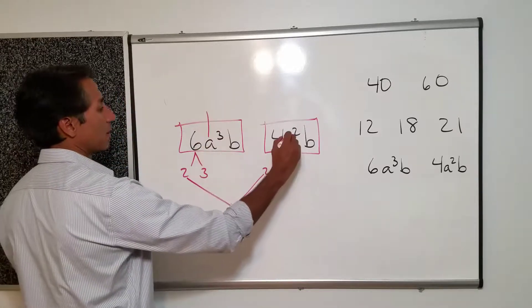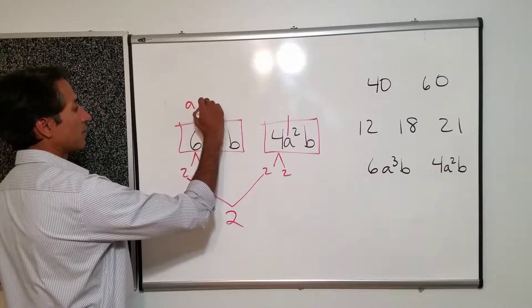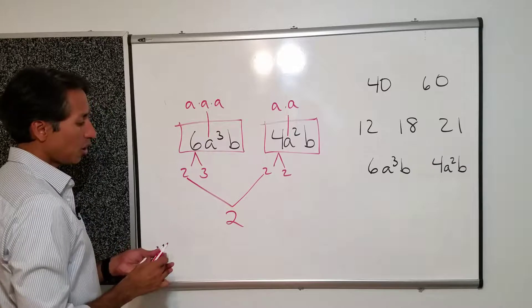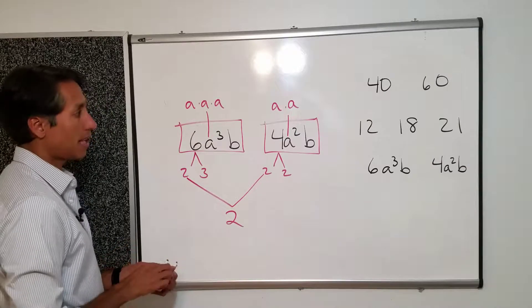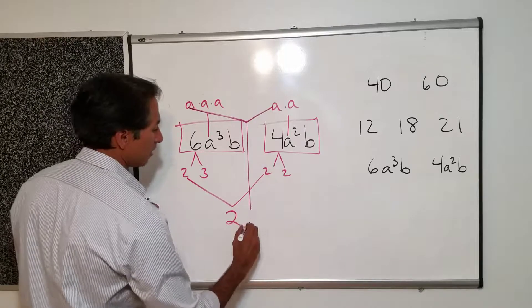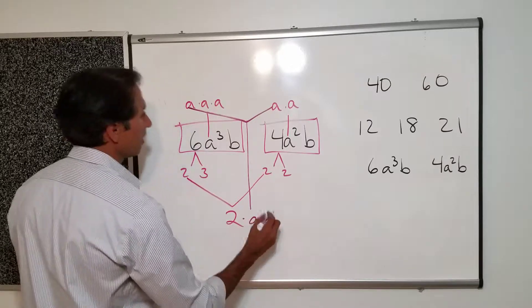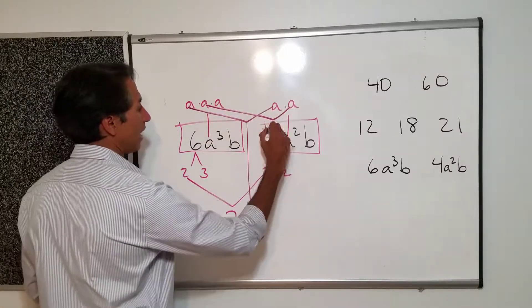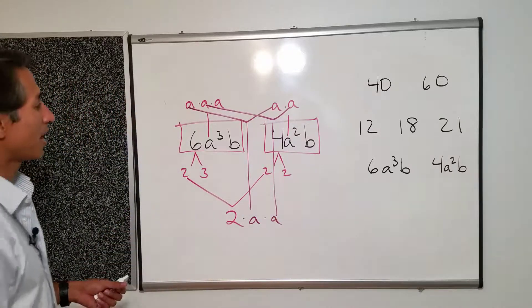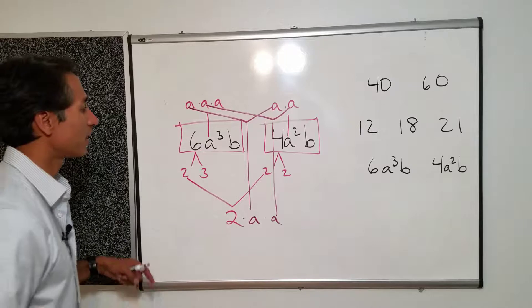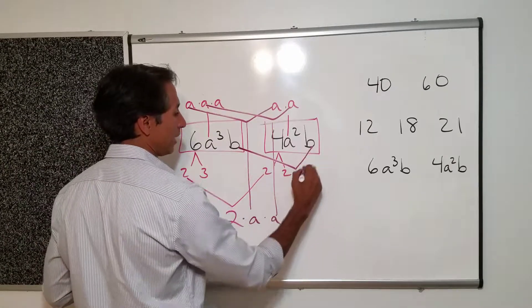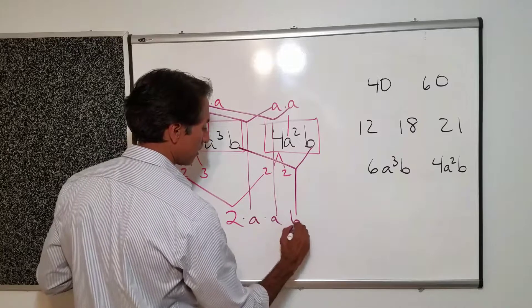But now let's look at the a's. I have a times a times a and a times a. So how many a's can I pull out? Well I can pull out an a and an a to get an a. I can pull out an a and an a to get an a. I know I'm kind of writing over my own work. But whatever. You're getting it right.